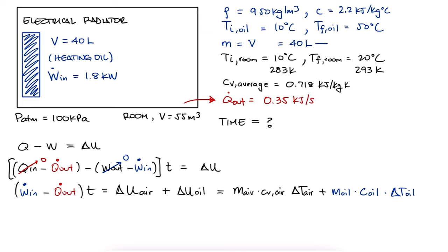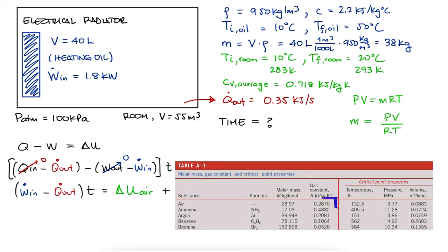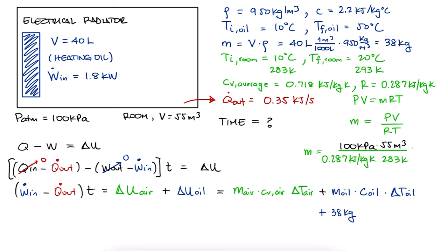The mass of the oil is the volume of the oil times the density. The mass of the air we can find using the ideal gas equation. If PV equals mRT, then m equals PV over RT. We look up the gas constant for air and substitute the value to find the mass of air.